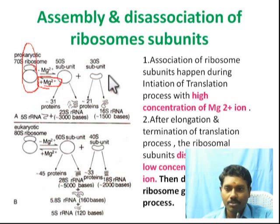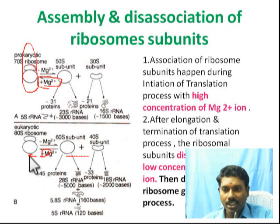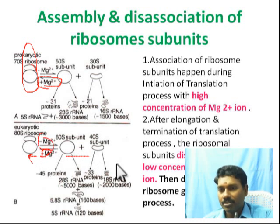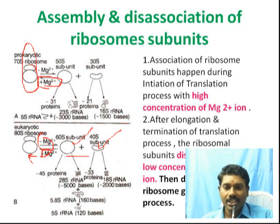In prokaryotes, the subunits are 50S and 30S. In eukaryotes, the situation is similar with 60S and 40S subunits. Mg2+ ion plays an important role in the assembly and dissociation of ribosomes. High concentration of Mg2+ facilitates the joining of both subunits.